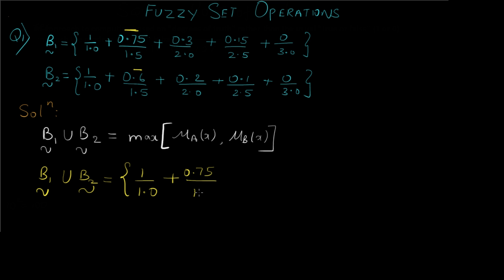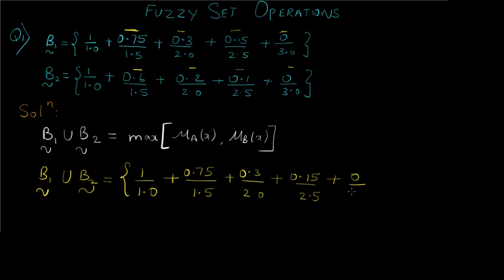The lower value is kept unchanged. For the third term, we compare the two values and 0.3 is the maximum. For the fourth term, we compare 0.15 with 0.1, and 0.15 is greater. For the last term, we compare the two values and the resulting answer is 0. And this is our final answer for union.